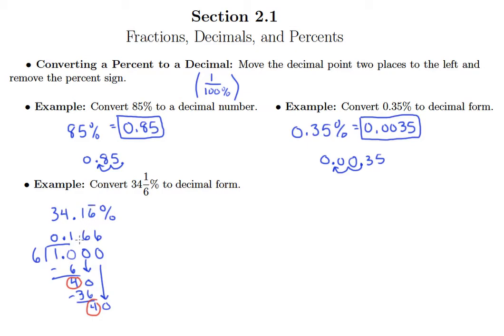So a bar over the six that repeats forever. So thirty-four and one-sixth percent equals thirty-four point one six bar percent. All right. And so now this is written as a decimal.